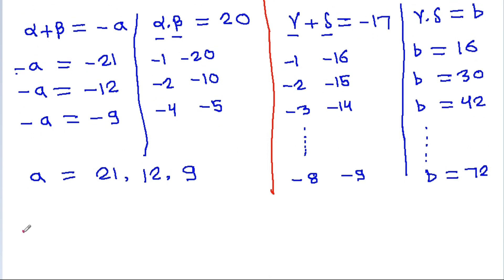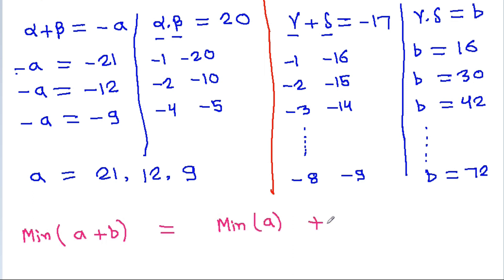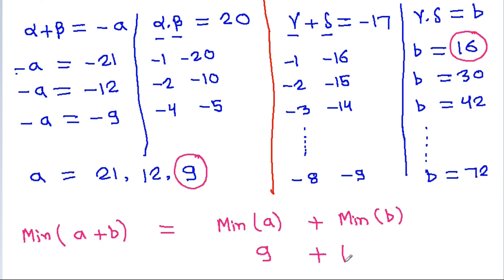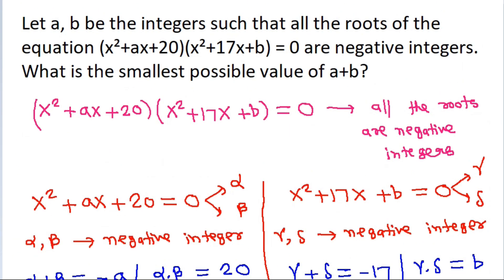We have to find the minimum value of a plus b, which equals the minimum of a plus the minimum of b. The minimum value of a is 9 and the minimum value of b is 16, so the answer is 9 plus 16 equals 25.